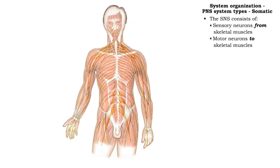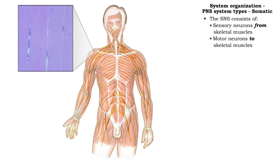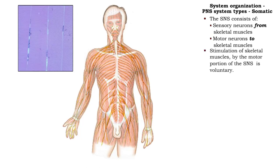The somatic nervous system contains sensory neurons that convey position information on muscles, as well as motor neurons that convey information to skeletal muscles only.